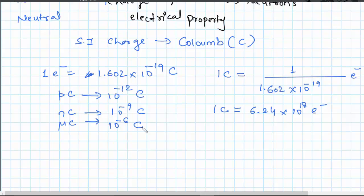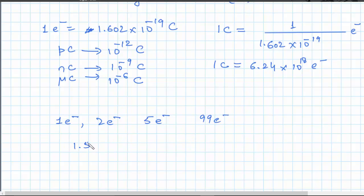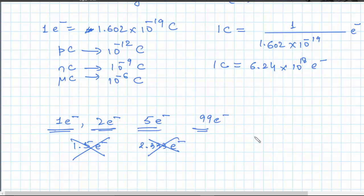According to experimental observation, the only charge that can exist in nature is an integral multiple of the electronic charge. So we can only have 1, 2, 5, 99 electrons, etc. There will not be any 1.5 or 2.333 electronic charge — those are wrong. The charge on one electron is 1.602 × 10⁻¹⁹ coulombs, with a negative sign.